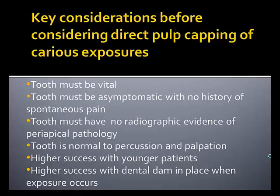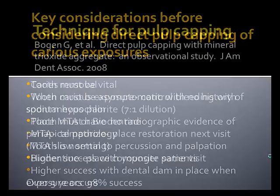There are key considerations before considering direct pulp capping. The tooth must be vital and asymptomatic with no history of spontaneous pain. The tooth must have no radiographic evidence of periapical pathology and be normal to percussion and palpation. Younger patients give us higher success, and use of a dental dam also gives us higher success.